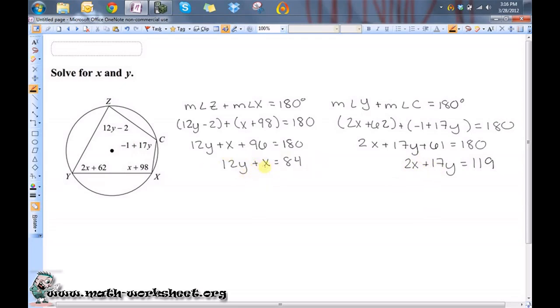So what I'm going to do is take this equation here and solve it for X. The reason I'm choosing this one is because there is no coefficient in front of the X. Since this one has no coefficient, it would be really easy to solve this equation for X in terms of Y. I just subtract 12Y from both sides and I get X equals negative 12Y plus 84.